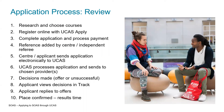To review the full application process: research and choose your courses carefully; register online with UCAS to apply; complete the application and process the payment; your reference will be added by your centre or an independent referee; send your application electronically to UCAS; UCAS will process and send it to your chosen universities; universities will review and make decisions — unconditional, conditional or unsuccessful; view all offers in your UCAS Track account and reply by making your firm and insurance choices; and when your results come in, as long as you've met conditions for your firm or insurance choice, your place will be confirmed.